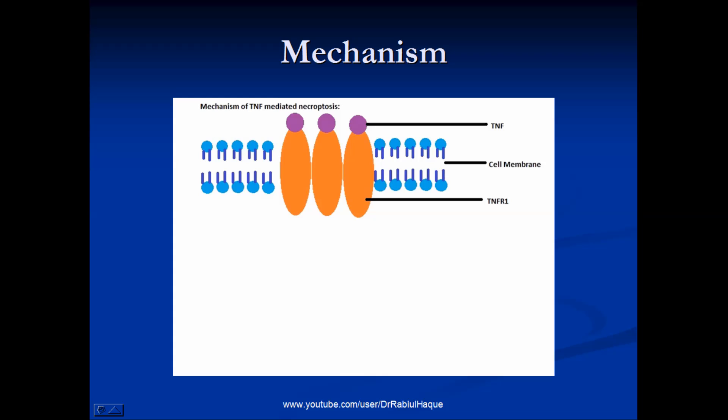The mechanism of necroptosis begins in a manner that has similarity with the extrinsic pathway of apoptosis. Recall from my previous video on apoptosis that during the process of apoptosis there were two phases: one was initiation phase and the second one was execution phase. And the initiation phase was again further subdivided into intrinsic pathway or mitochondrial pathway and extrinsic pathway or death receptor pathway.